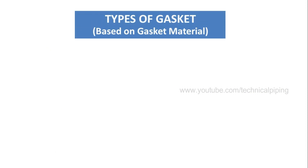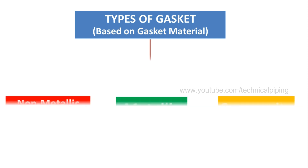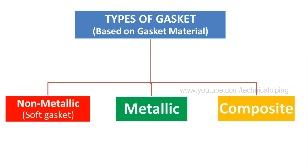Gaskets can be segregated into three main categories: number one, non-metallic; number two, metallic; number three, composite or semi-metallic. Dear friends, watch this video till the end to know all types of gaskets. I have also displayed gasket pictures in cross-sectional view for easy understanding.